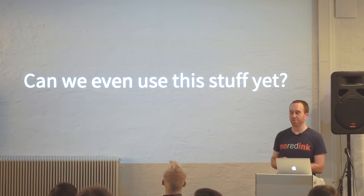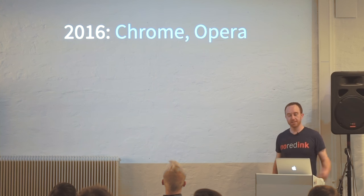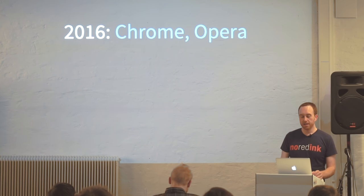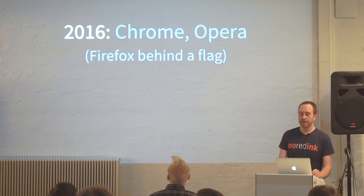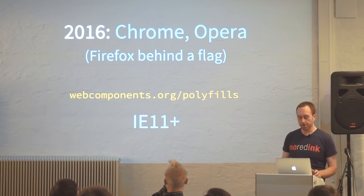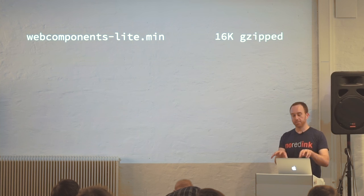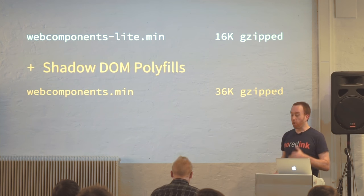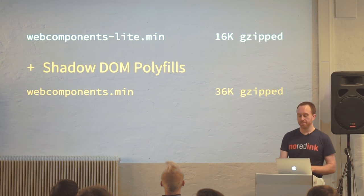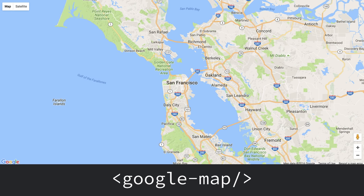First question: can we even use this stuff yet? Today in 2016, Chrome recently shipped with web components — you can now use them in Chrome Stable. Firefox has it behind a flag. But more importantly, there's a polyfill which will get you Safari, Internet Explorer 11 Plus, and Edge. If you want to use that polyfill, it's 16K gzipped for the bare bones — just custom elements and HTML imports. If you want the Shadow DOM stuff, that's more than twice as much, so you really have to want it. There's also potentially some performance overhead; I've heard anecdotal reports that these don't work quite as fast as their native counterparts, which kind of makes sense for a polyfill.